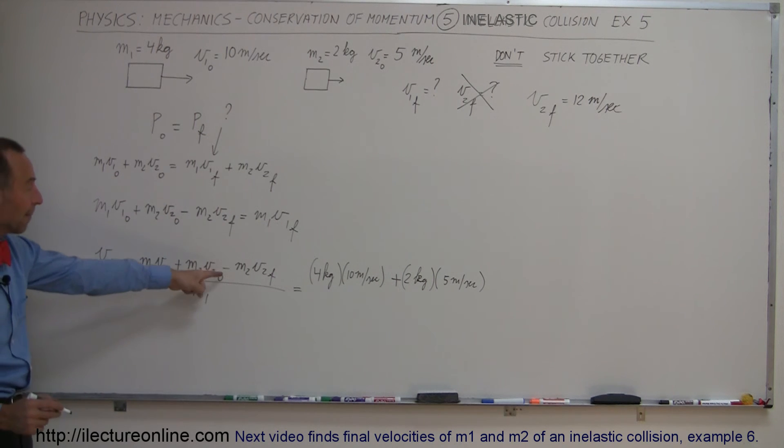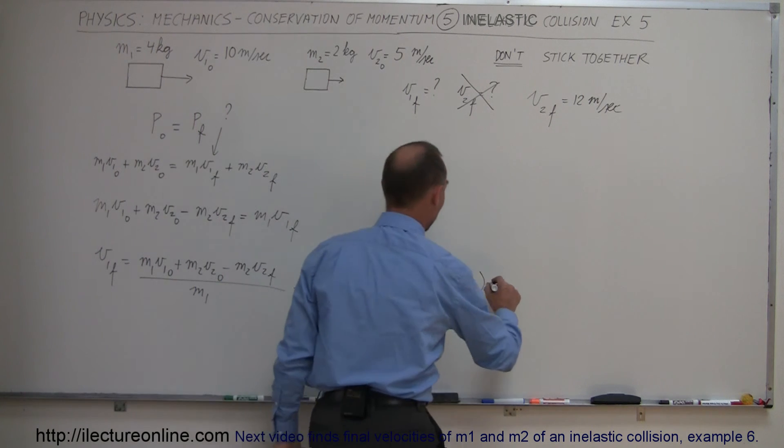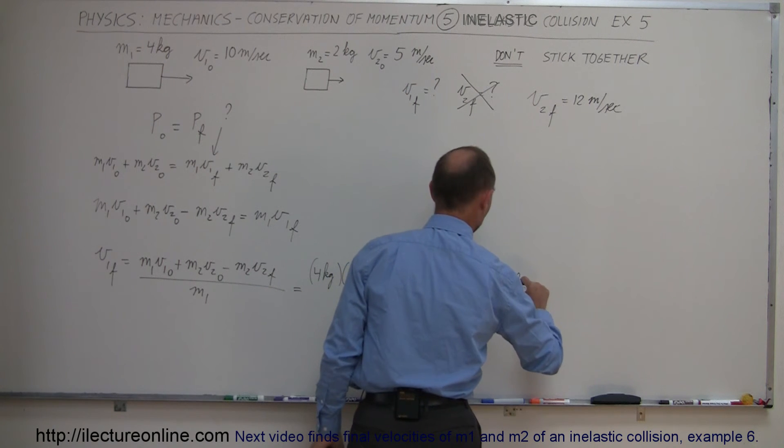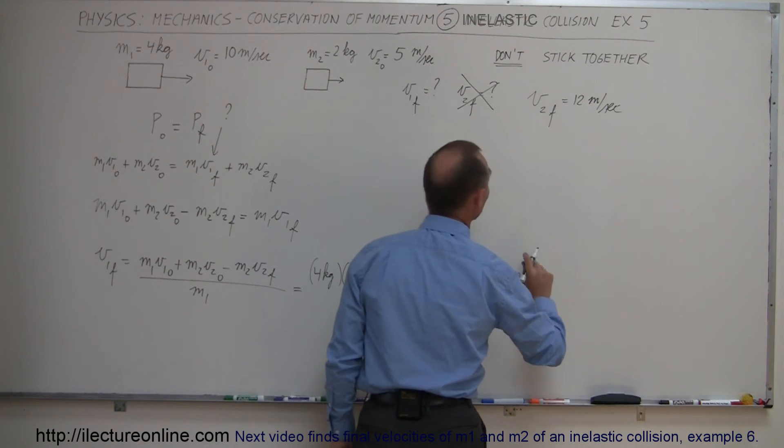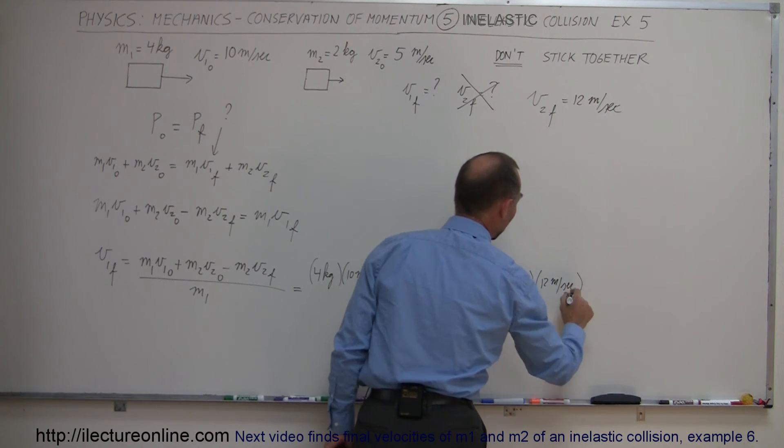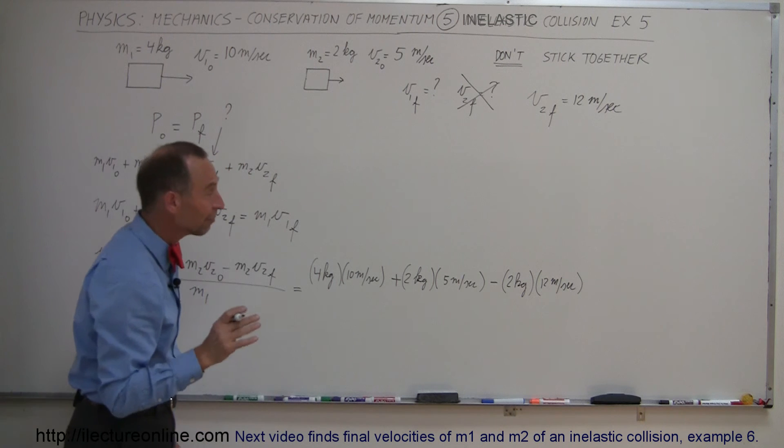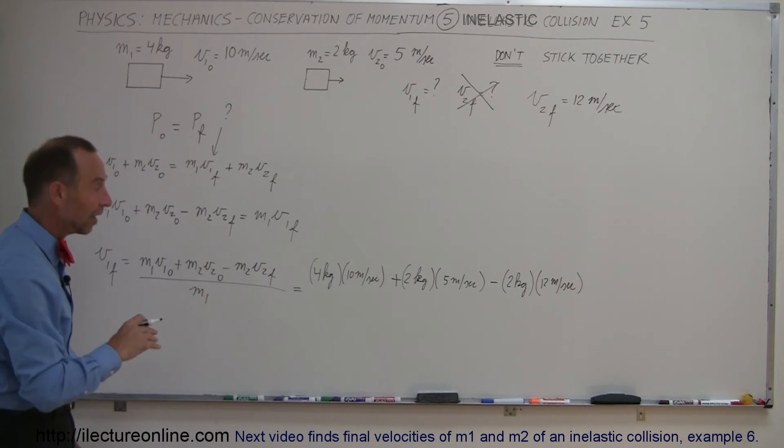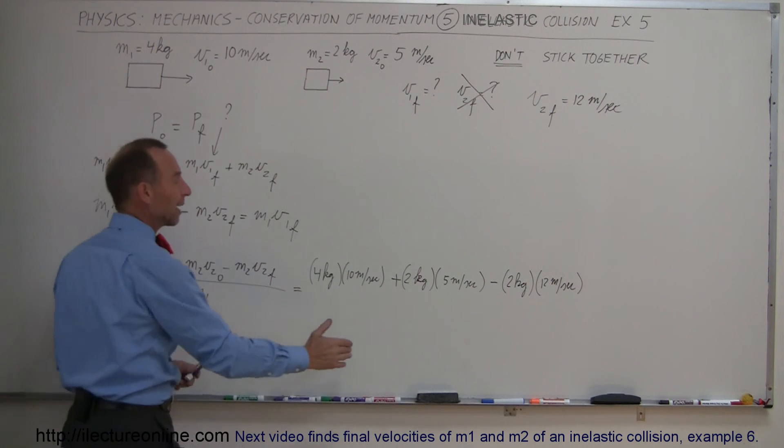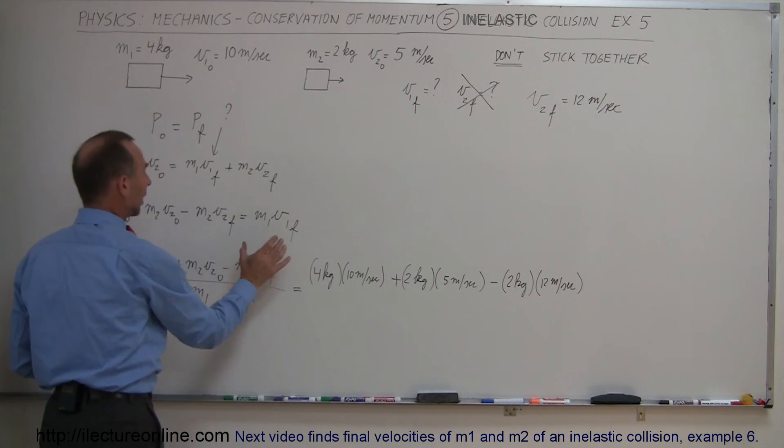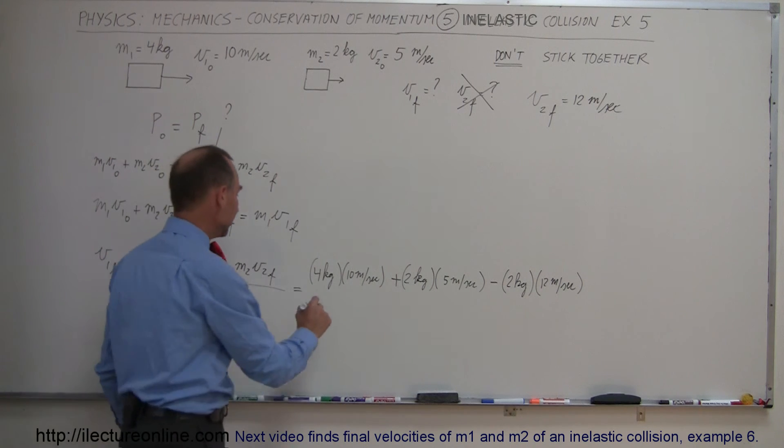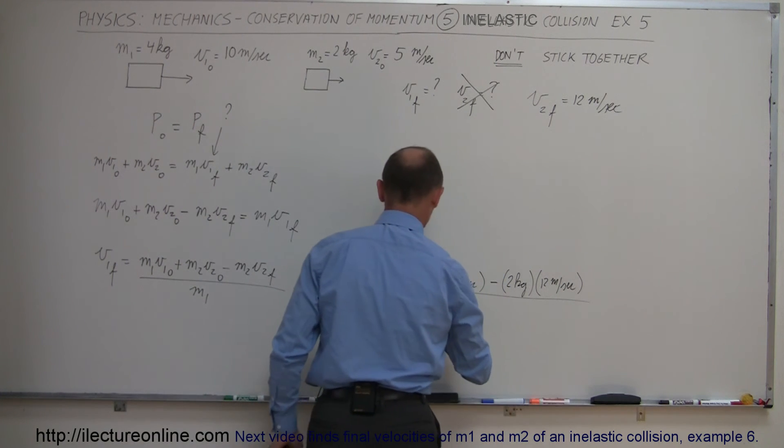We now subtract minus M2 V2 final, so minus M2 which is 2 kilograms and V2 final is a positive 12 meters per second. Remember that we always want to make sure we put in the right values, the right signs for the velocities. If it's to the left it's a negative, to the right is a positive. The reason why we have a negative here is because we simply moved that term over to the left side of the equation. Now we divide the whole thing by mass 1 which is the 4 kilogram mass.